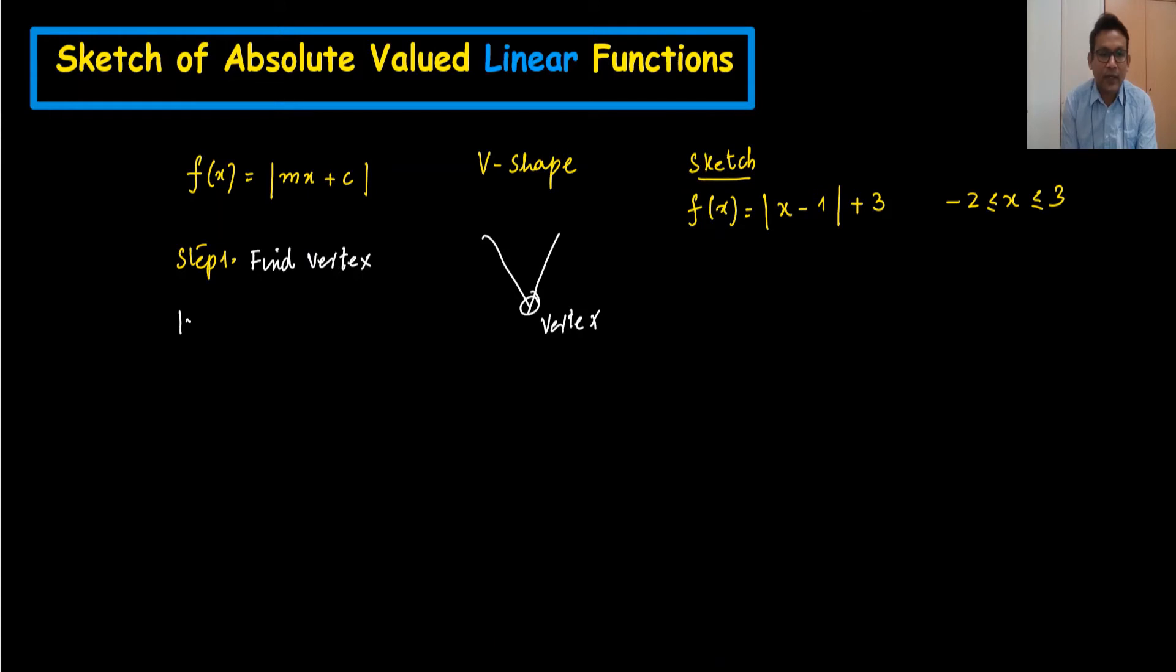Vertex we can find by setting mx plus c equal to 0. So here step number one is what I will do: x minus 1 only, not the whole equation, please, not the whole equation with plus 3. x minus 1 equal to 0, so x is equal to 1.